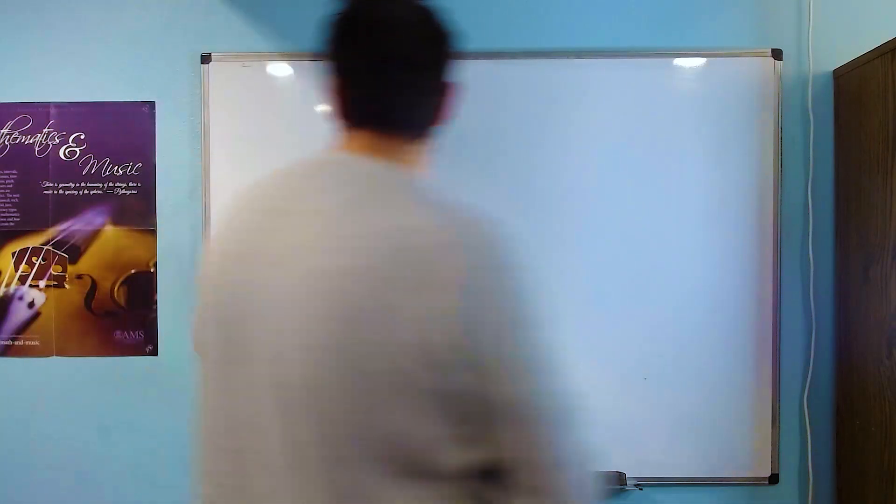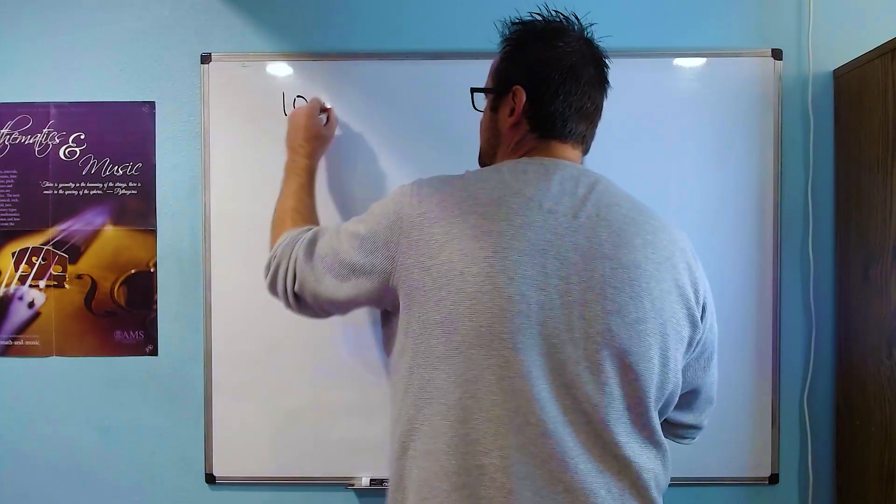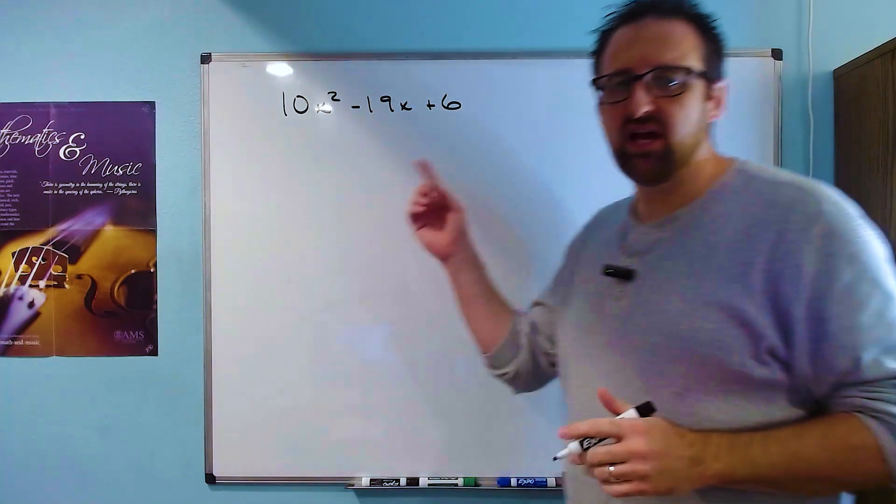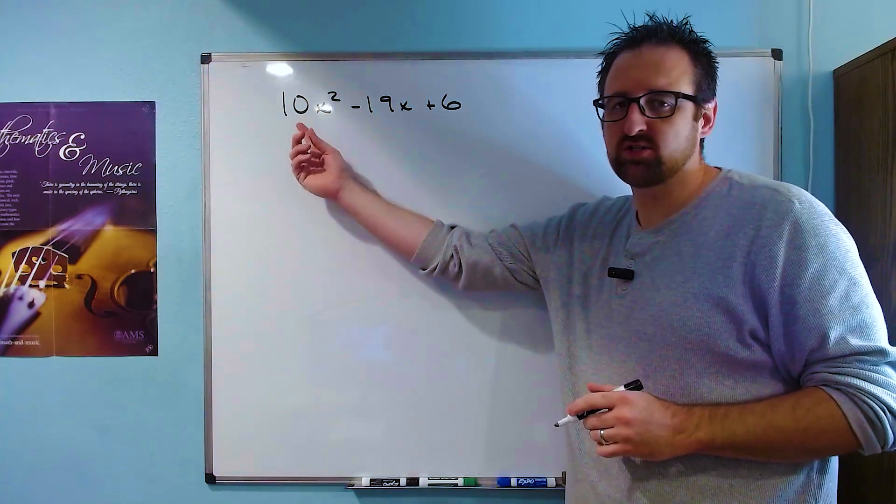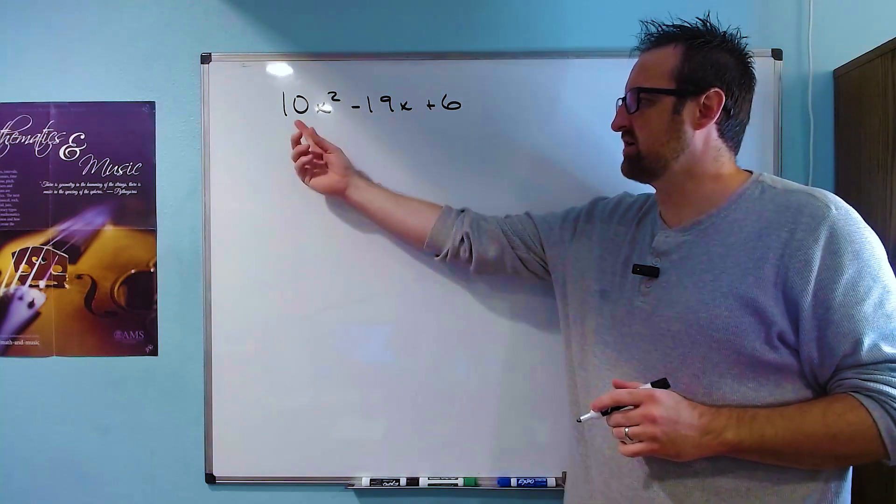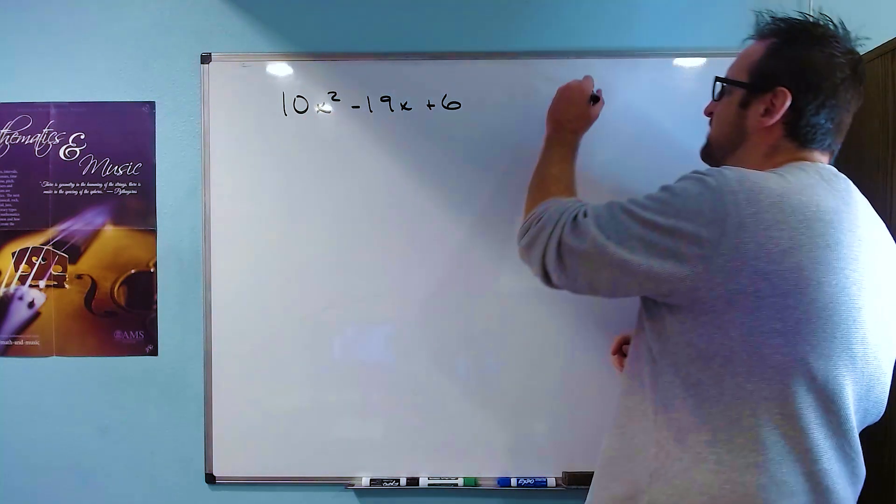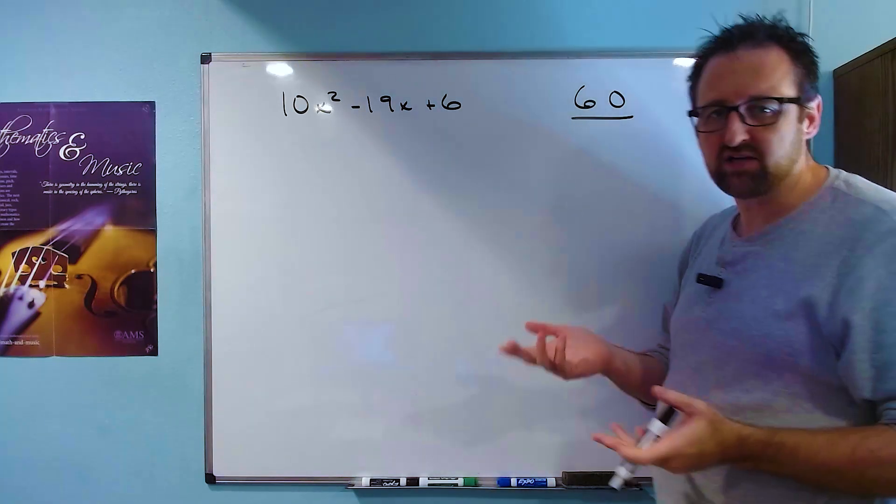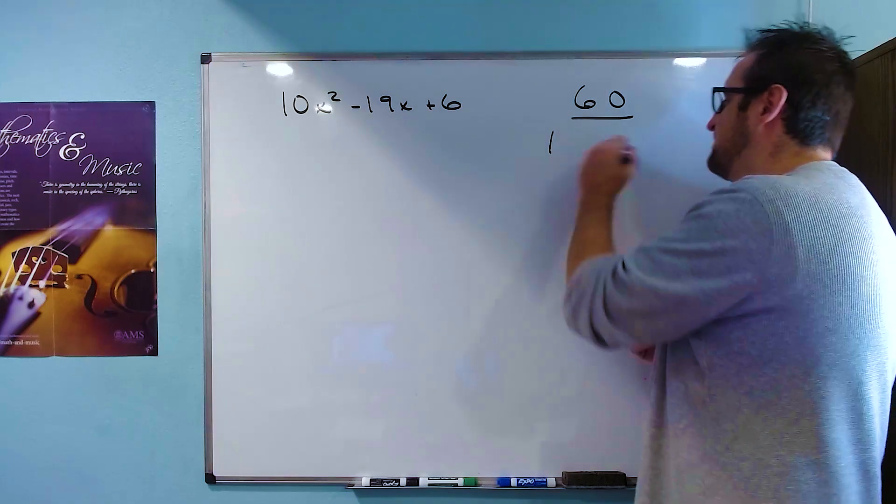In our first example, we're going to look at the polynomial 10x² - 19x + 6. Using the AC method, we take the first term and the last term, the coefficients, so 10 and positive 6. We multiply them together to get 60. And now we need to write down every possible pair of factors to the number 60.